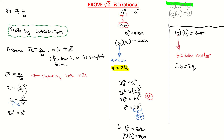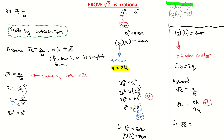Now we're practically done. We assumed that the square root of 2 equals a over b in its simplest form. But we've found that a = 2k and b = 2q, which means both the numerator and denominator are divisible by 2. That's the contradiction — the fraction is not in its simplest form. Therefore, the square root of 2 cannot be written as a fraction a over b in its simplest form, so the square root of 2 must be irrational.